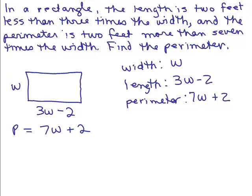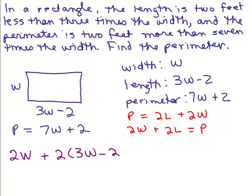The perimeter is twice the length plus twice the width. Or you could say twice the width plus twice the length is equal to the perimeter, it doesn't really matter. But basically, these are the same thing, right? I'm going to do it the second way. So I'm going to do twice the width. What's the width? The width is W. So there's twice the width plus twice the length. Now what do we say the length was? 3W minus 2. And that equaled what? The perimeter. And what's the perimeter? 7W plus 2.